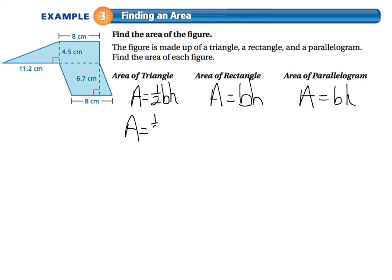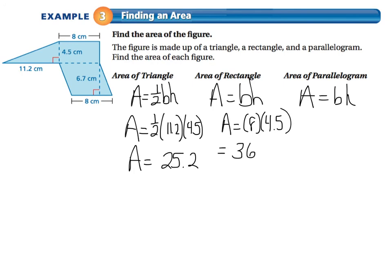So the triangle is going to be one-half of the base, which is 11 and 2 tenths, multiplied by the height, which is 4 and a half. And that's going to give me half of 11.2. That would be 25.2. The rectangle is just 8 times 4 and a half. 8 times 4 and a half is 36. And the parallelogram is 8 times 6.7, which would give me 53.6. So if I add these all up, the total area is 114 and 8 tenths square centimeters.